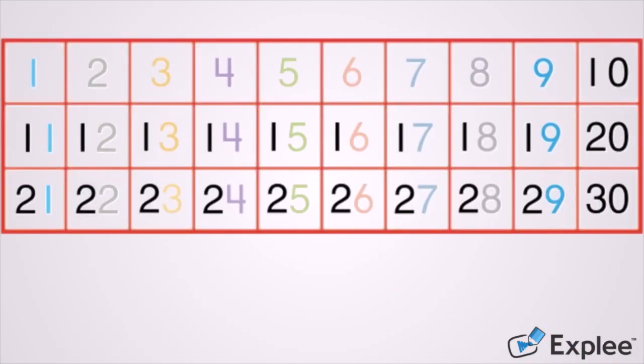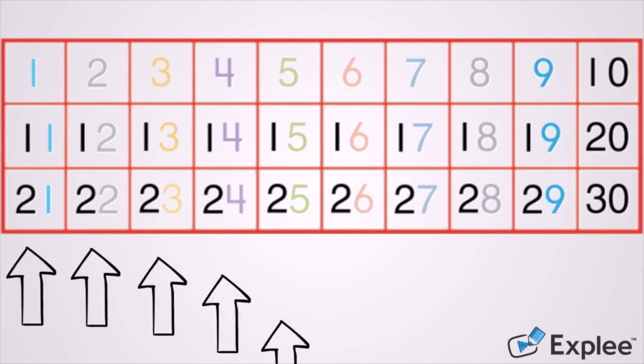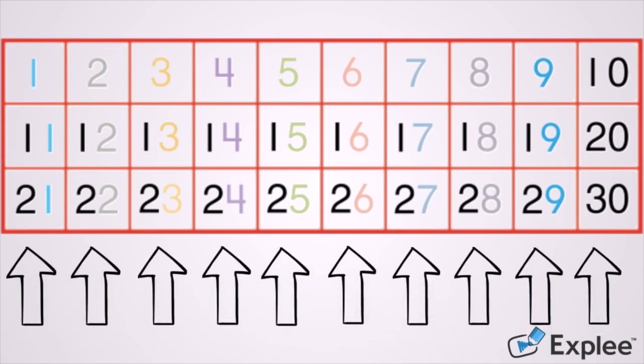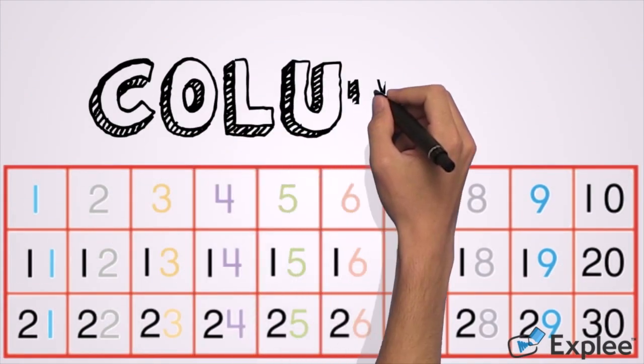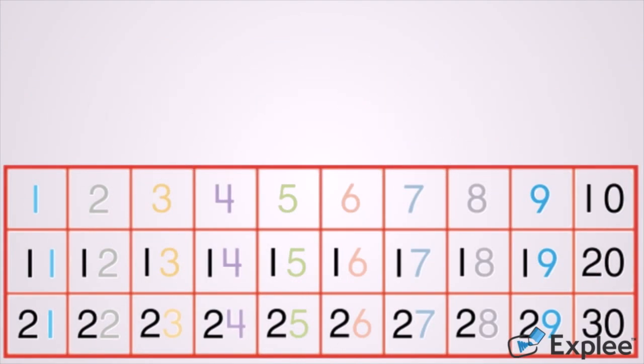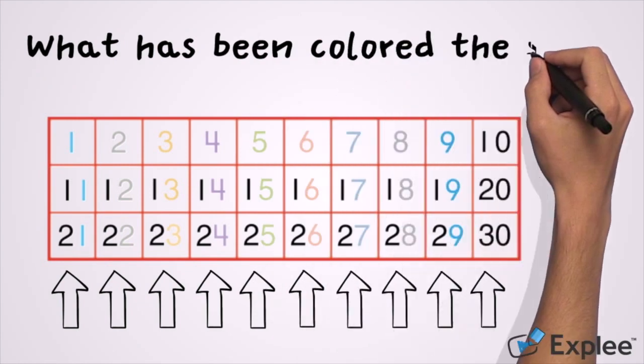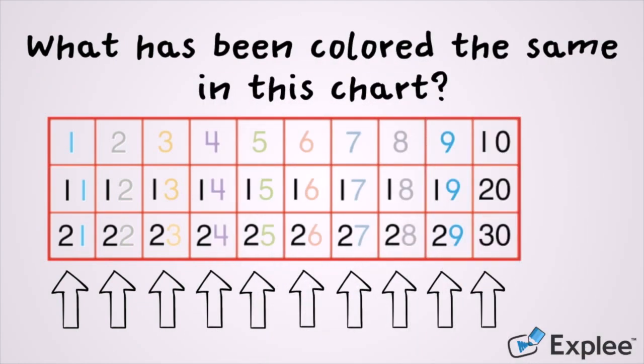Let's see if we can find another pattern looking at a different number chart. In this number chart we're going to look for patterns in the parts that go up and down. The part of the chart that goes up and down is called a column. So let's look at the columns. What has been colored the same in this chart? In each column there's a number that's been colored. Let's look at the first column. All of the ones have been colored in.